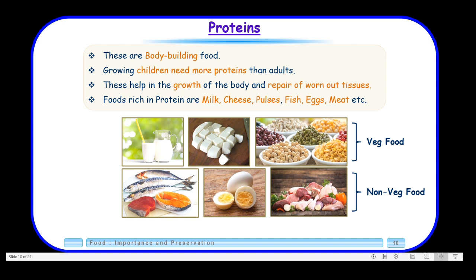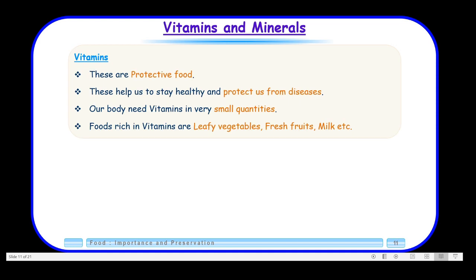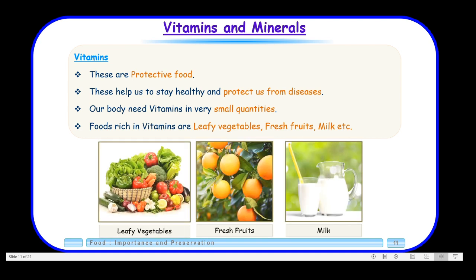So that was about body-building food. If there is a deficiency of protein in your body, then we suffer from a disease called kwashiorkor. Now we will move on to the protective food. The nutrients that fall in this category are vitamins and minerals. As the name suggests, they protect us from various diseases. Vitamins are protective food — they help us to stay healthy. Our body needs vitamins in very small quantities. We get vitamins from leafy vegetables, fruits, and milk.